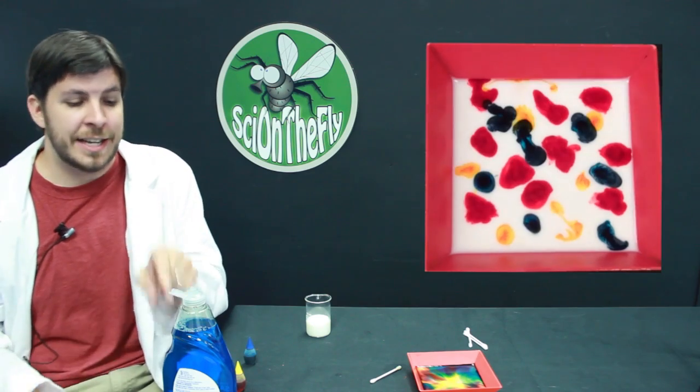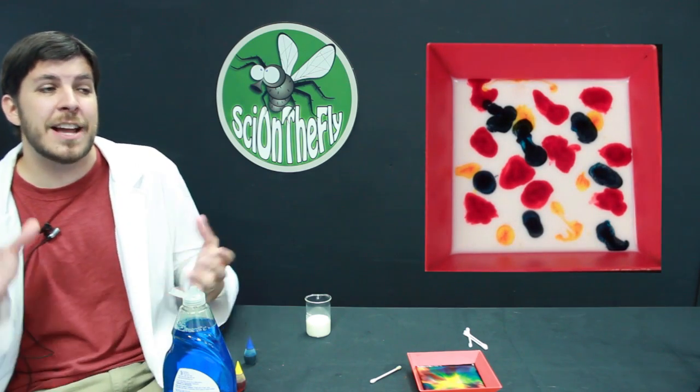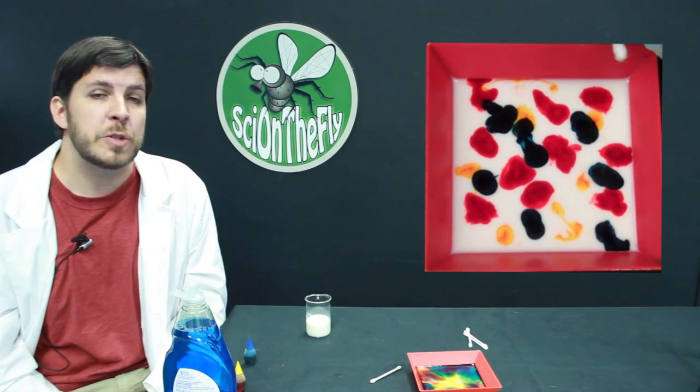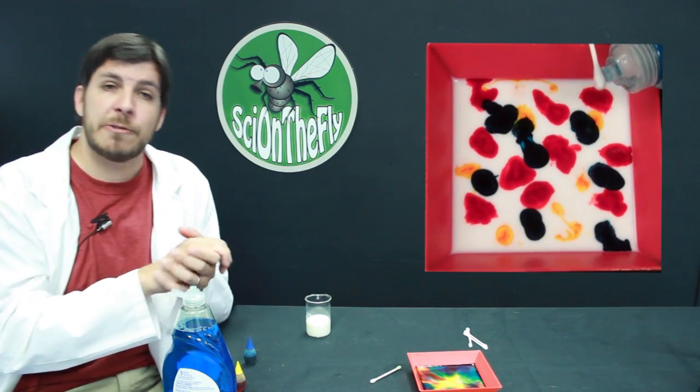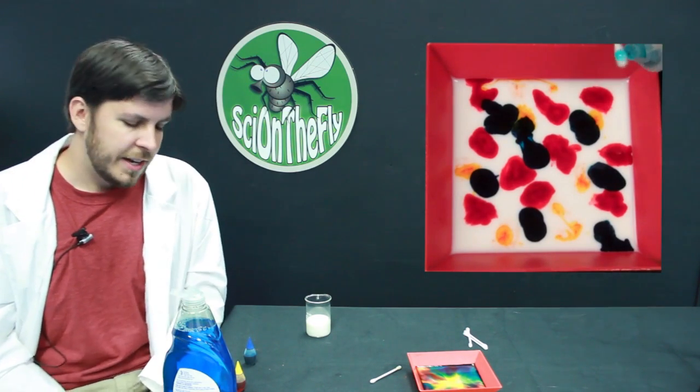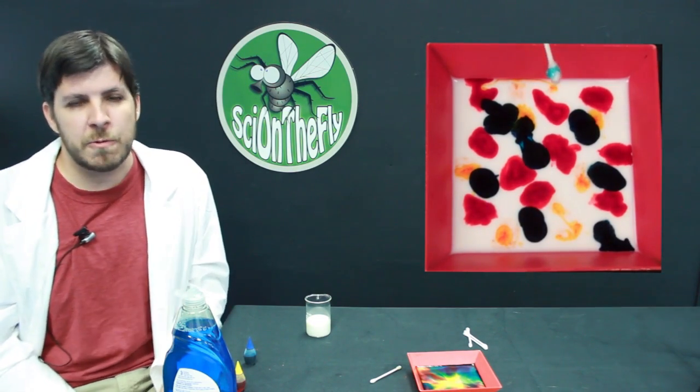And when multiple hydrophobic ends of soap molecules interact with the fat molecules that are in the bowl of milk, that's where we get our swirling action. They're cramming into each other, they're spinning, they're turning, and that's causing the display.